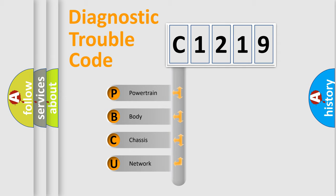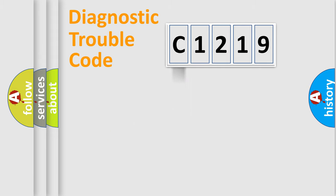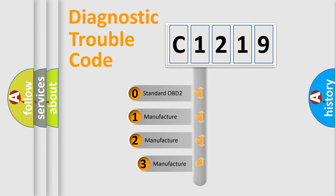We divide the electric system of automobile into four basic units: Powertrain, body, chassis, and network. This distribution is defined in the first character code.